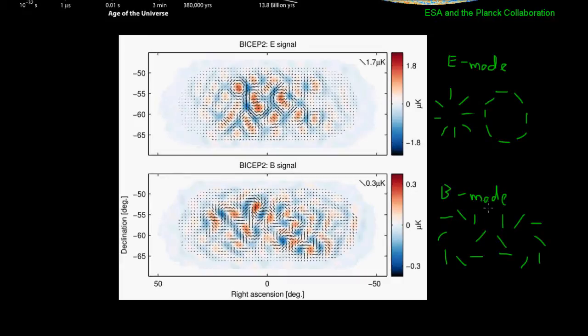In order to produce these kinds of patterns, you would actually need a fairly strong source of gravitational waves. Stronger, in fact, than you would get from at least the most basic model of the Big Bang alone.